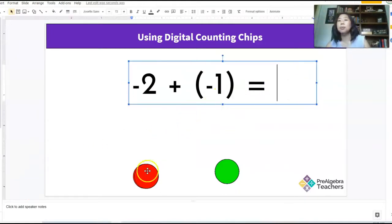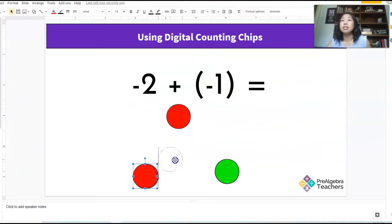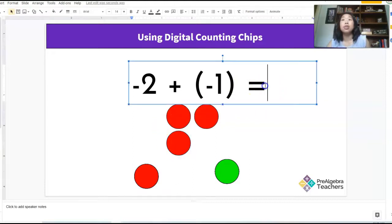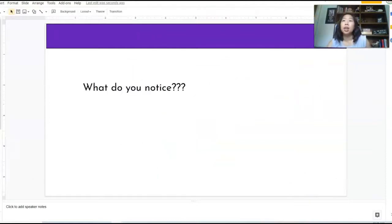Okay. In our next example, I have two negatives and one positive. Do any of these zero out? No. So what do I have? I have three negatives. Okay. What do you start? So then I will pose this question. What do you start to notice?